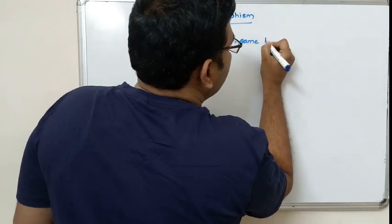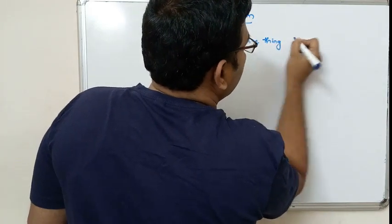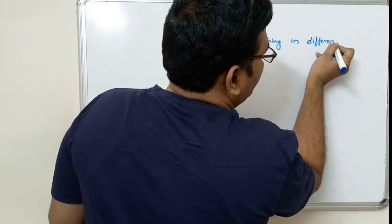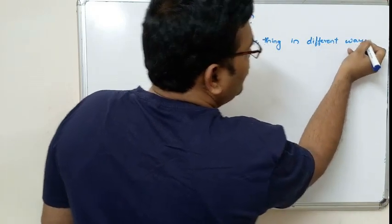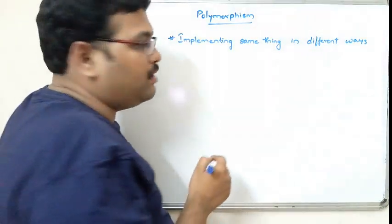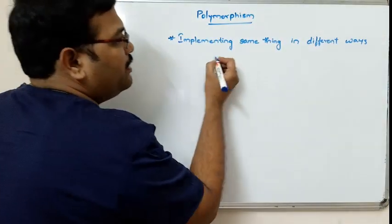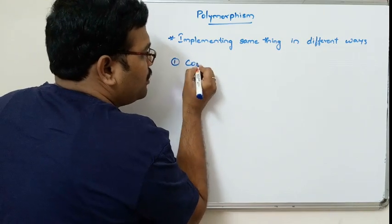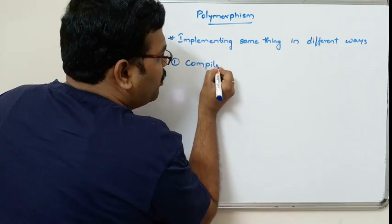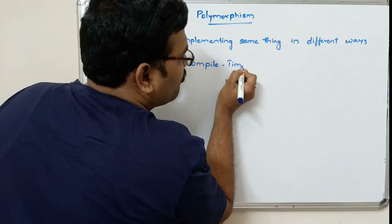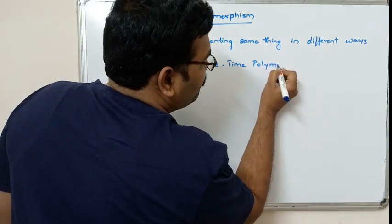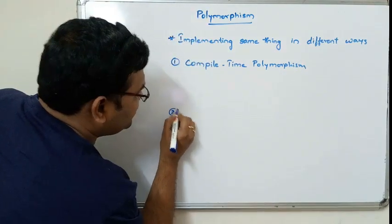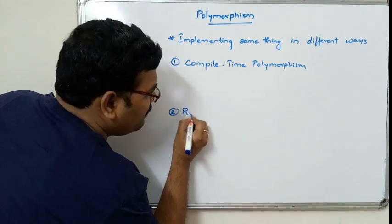Implementing the same thing in different ways is called polymorphism. Polymorphism is divided into two categories: one is compile-time polymorphism, and the second one is runtime polymorphism.